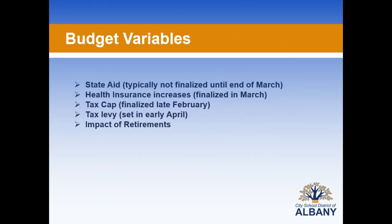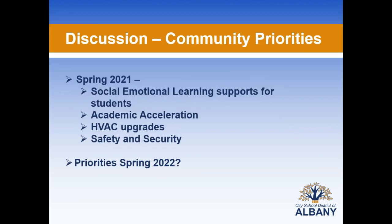Our budget variables continue to be our state aid, which is typically not finalized until the end of March, our health insurance increases finalized later in March, the tax cap which will be submitted by March 1st, and the levy that is set by the board when they adopt the budget in April. We are also continuing to analyze the impact of retirements — we have been notified of 41 retirements for next year at this time.